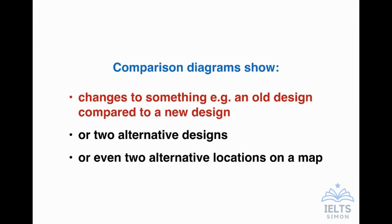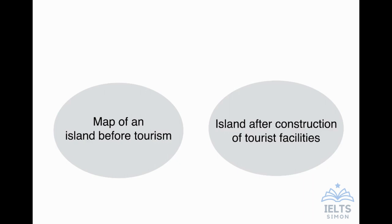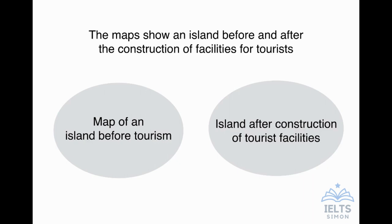Looking back at the types, we'll stay on the first type because you can also have a map that shows changes to a design. There's a good question in Cambridge IELTS Book 9 showing an island. You see a map of the island before tourism and next to it another map of the same island after construction of tourist facilities. The question could look like: 'The maps show an island before and after the construction of facilities for tourists.' I call this a before and after map, and I consider it exactly the same task as the before and after diagram. Don't worry that they are maps — it's no different from the diagram question.